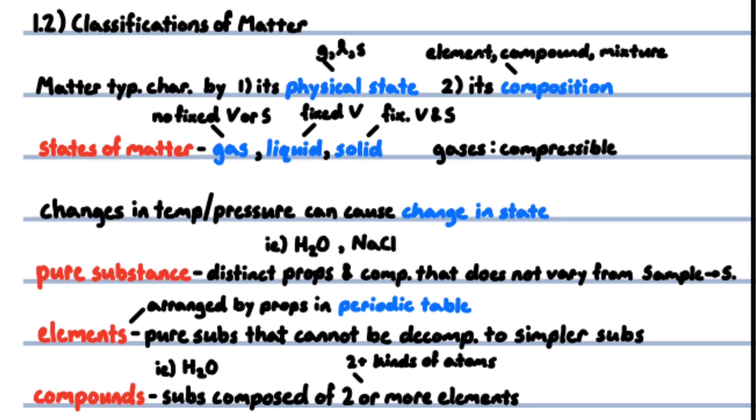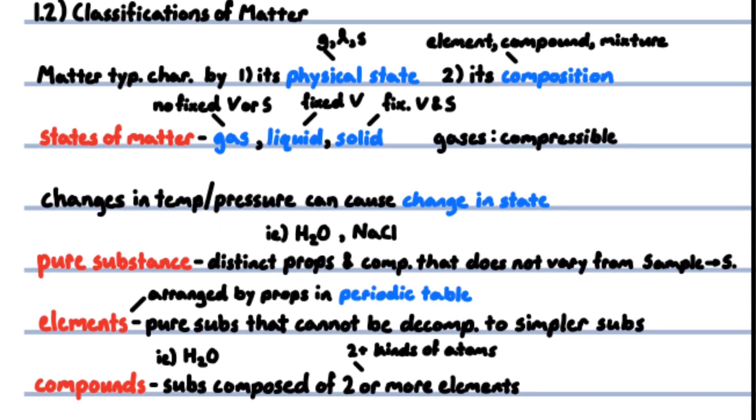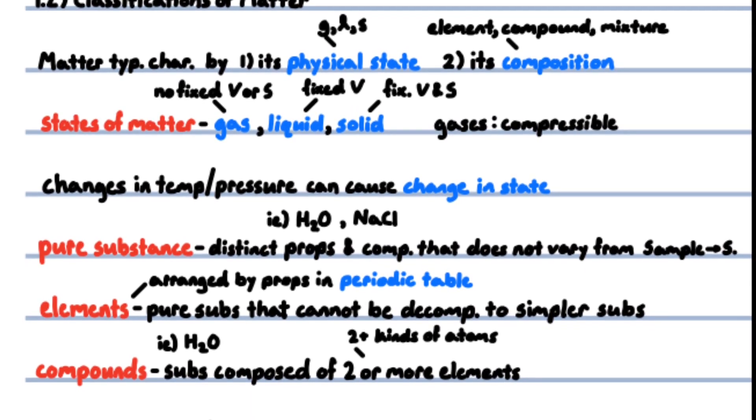Classifications of matter: matter is typically characterized by one, its physical state, whether it's a gas, a liquid, or a solid, and two, its composition, whether it is an element, a compound, or a mixture. States of matter: gas, liquid, and solid.